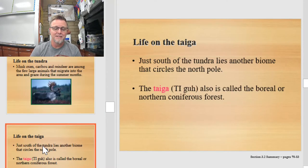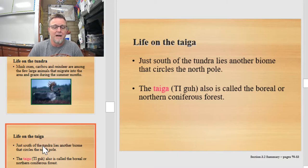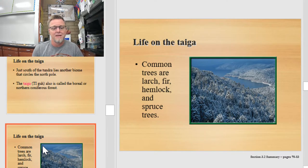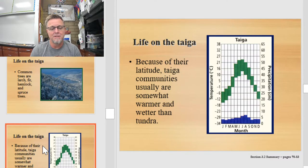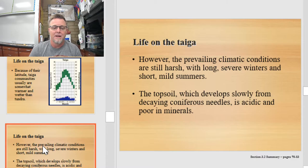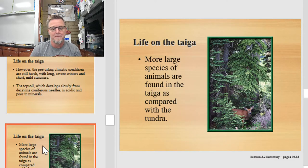Next is the taiga, just south of the tundra, encircling the North Pole. The taiga is also called the boreal forest or the northern coniferous forest. The most common life form here are cone-bearing trees — fir, hemlock, spruce, and pine. Taiga communities are somewhat warmer and wetter than the tundra, but the prevailing conditions are still harsh, with long severe winters and short mild summers. The topsoil, which develops slowly from decaying coniferous needles, is very acidic and poor in minerals. You do have more large species of animals in the taiga than in the tundra.